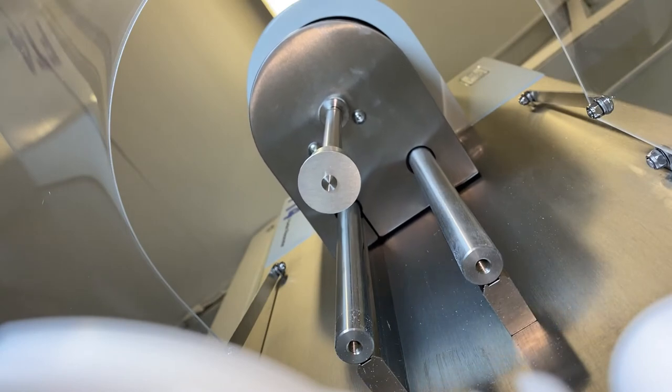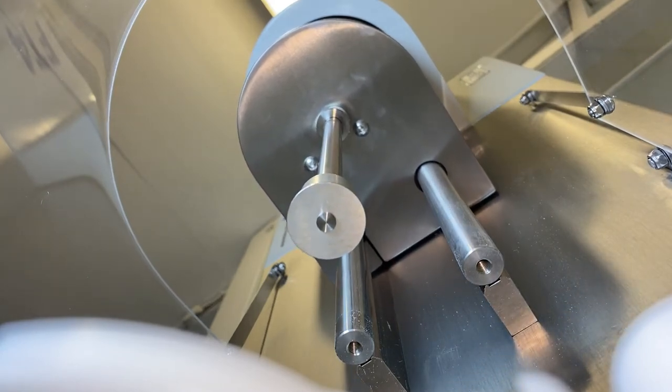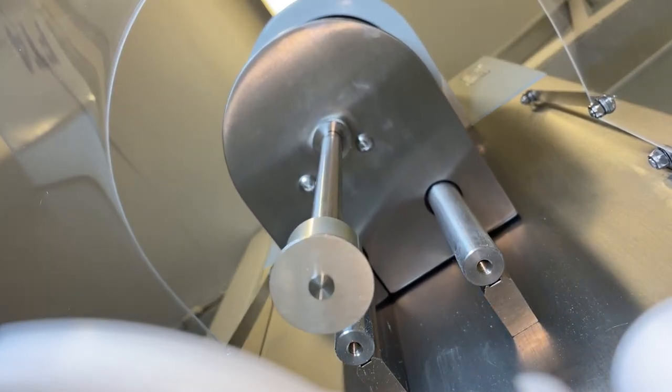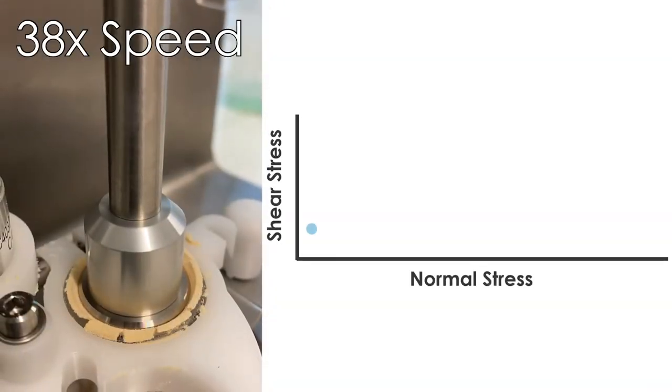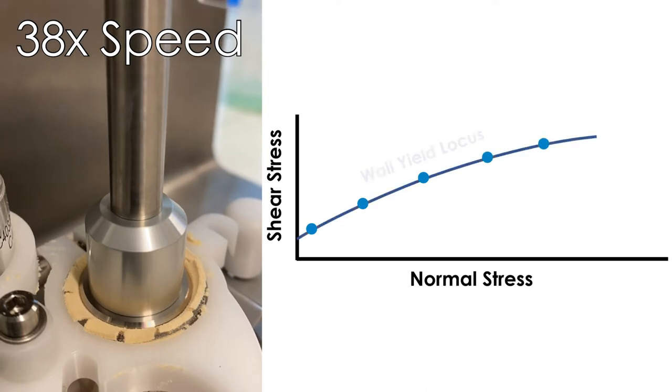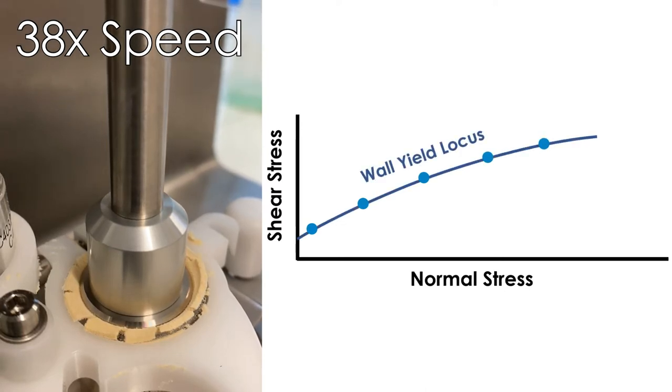Making the incorporation of wall friction measurements into plant design calculations a necessity. Measuring powder wall friction entails measuring the steady state shear stress at a range of load stresses as a powder slides against a surface.